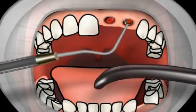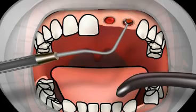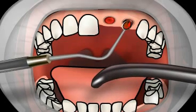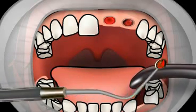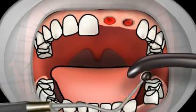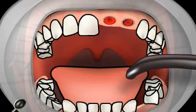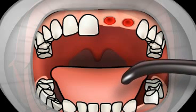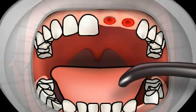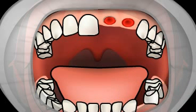Now the bone socket fills with blood. The blood clot that forms protects the alveolus from the intrusion of germs from the oral cavity, until the surface of the wound is overgrown with a mucous membrane.